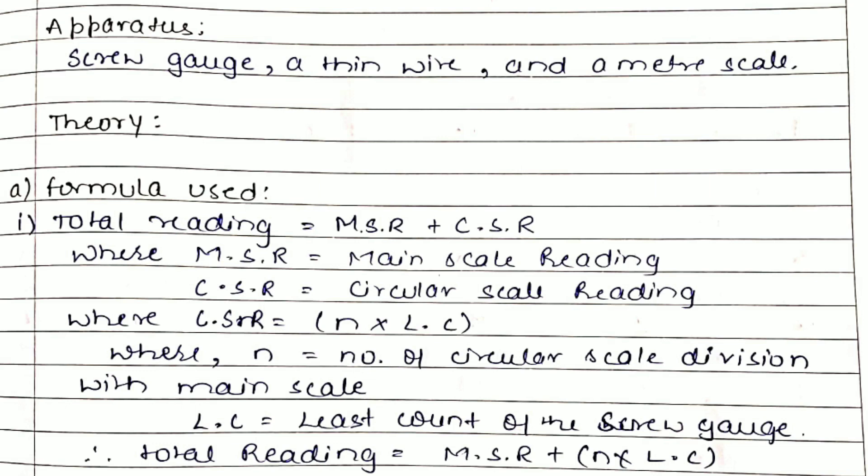N is the number of circular scale divisions that coincide with the main scale. Here also the main scale reading always remains constant and the circular scale reading can vary from time to time. It depends upon the readings you take and whether it's correct or not.